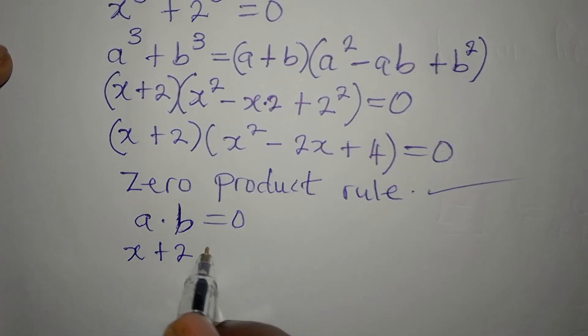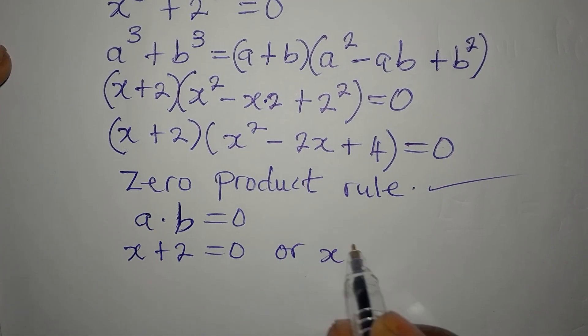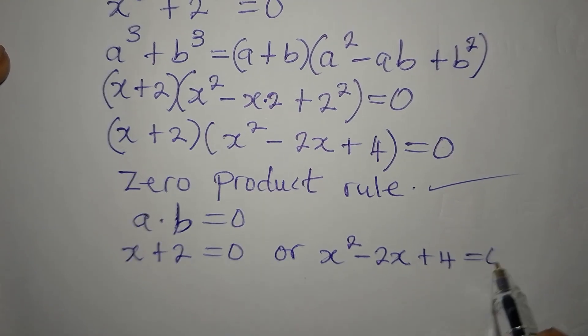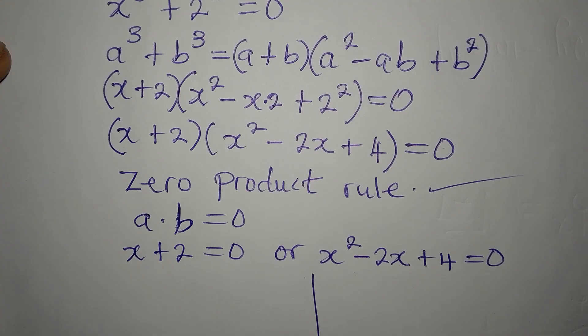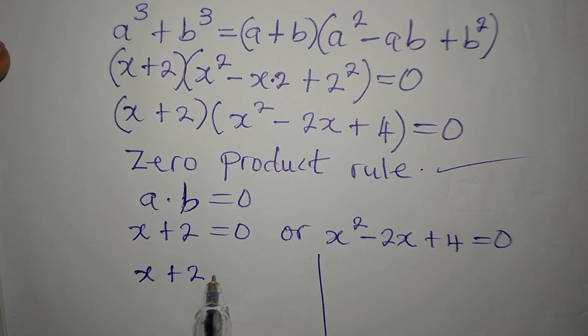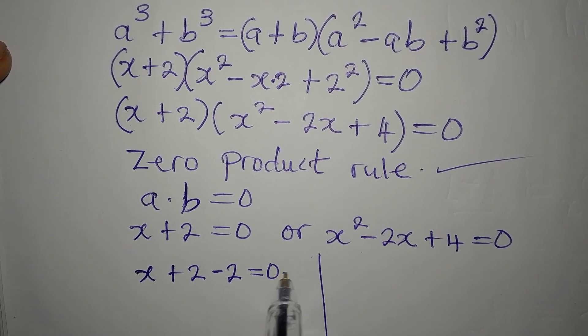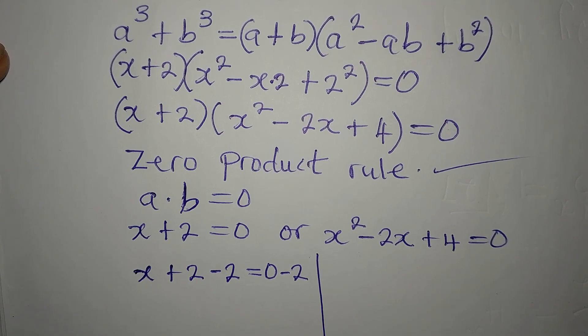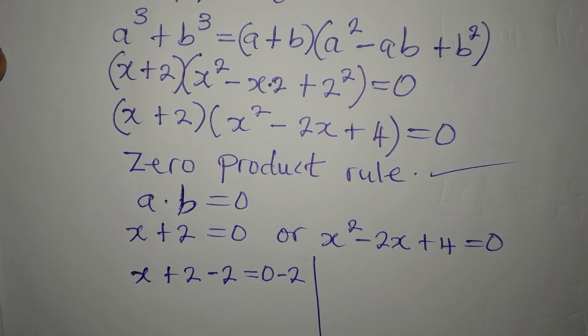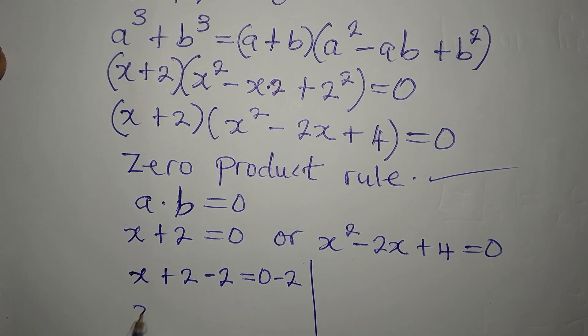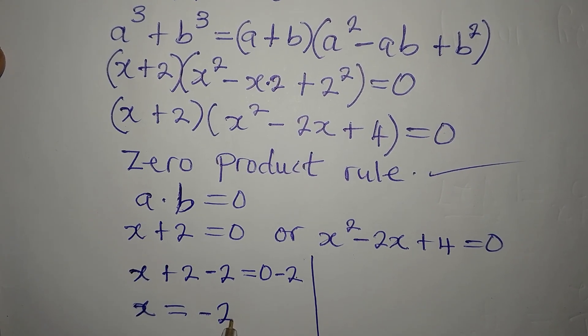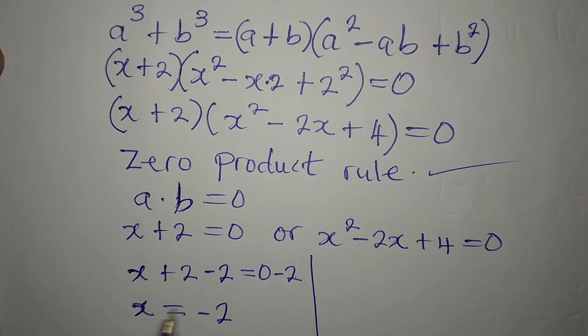x plus 2 is either 0 or x squared minus 2x plus 4 is equal to 0. So let's solve this. From here, I can have x plus 2 minus 2 equals 0 minus 2. Remember, the additive inverse of 2 is minus 2. So because of that, it has to appear on two sides. Now, x will remain here and it's equal to 0 minus 2. That is minus 2. So one of the solutions here is minus 2.